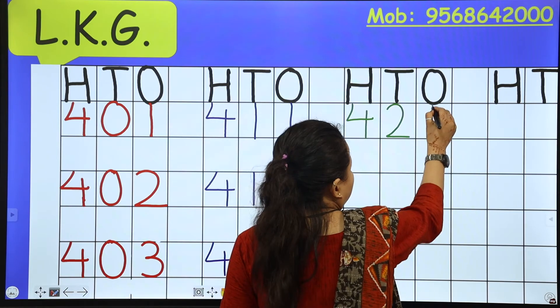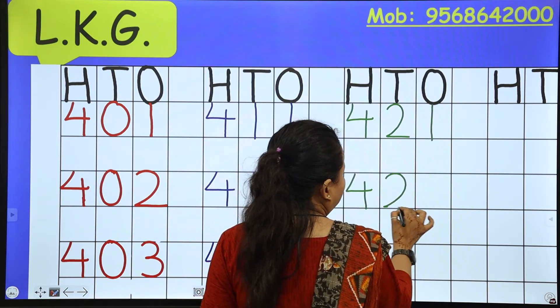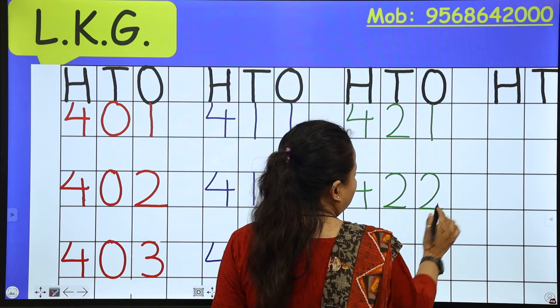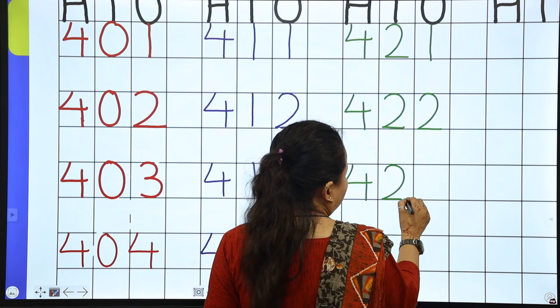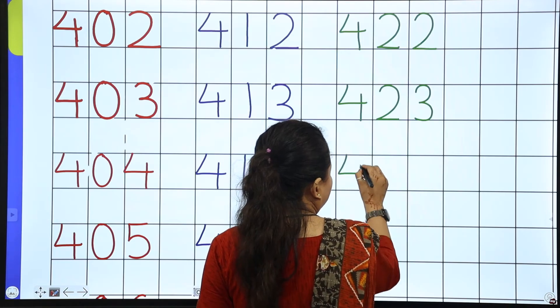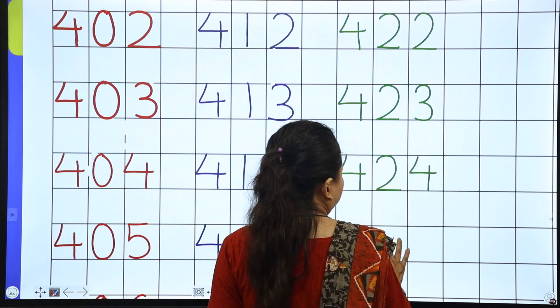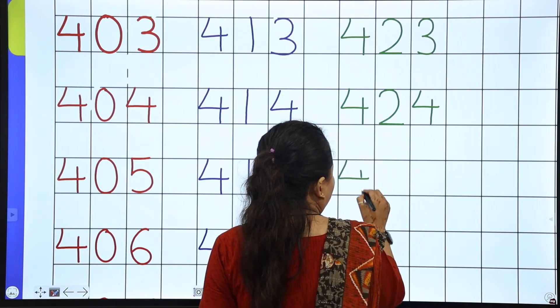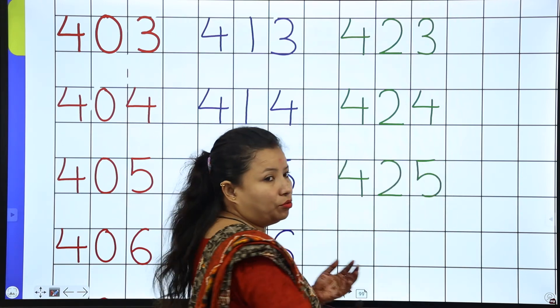That is 420. Now next line start with 421. Okay. So 421. 20, it means the sound of 2 is coming. 422, 423. Next number is 424.